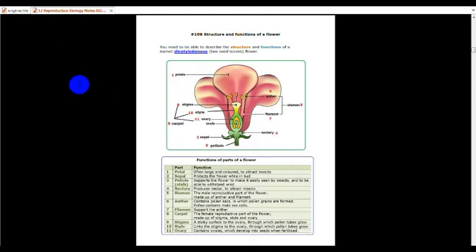So for the first part, it is petals. So the colorful part, petals. Number 2 is the sepal. The part number 3 is pedicel. Number 4 is nectary.